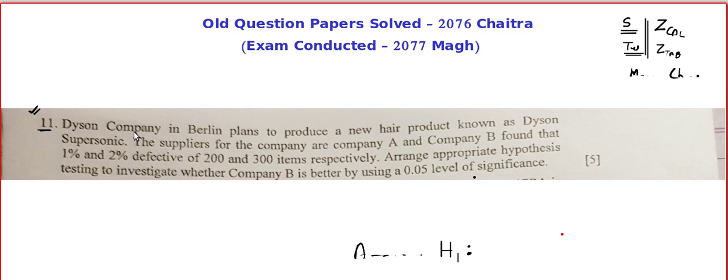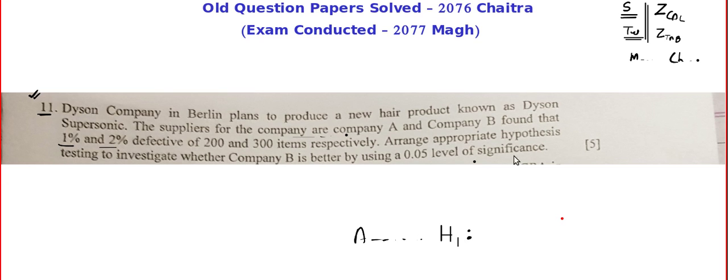We have a question about Dyson company. The question is a little bit vague over here but we can understand. They are talking about the defectives and we are to investigate. They are given the proportion - one person is defective out of 200, two persons are defective out of 300. We are trying to prove or check whether company B is better. Let P1 and P2 be the population proportion of the defective items. Listen very carefully, they are talking about defective items.